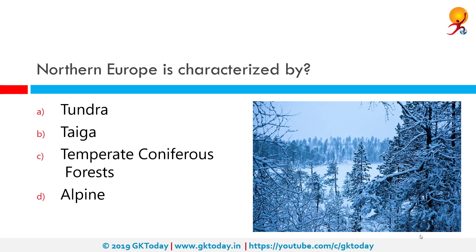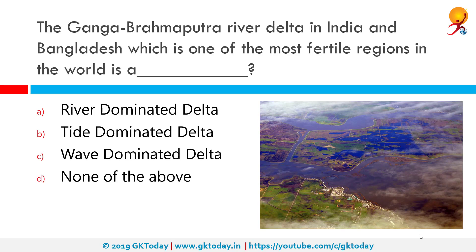Northern Europe is characterized by Taiga. Taiga is a Russian word for forest and is the largest biome in the world. It stretches over Eurasia and North America. The taiga is located near the top of the world, just below the tundra biome. The winters in taiga are very cold with only snowfall.